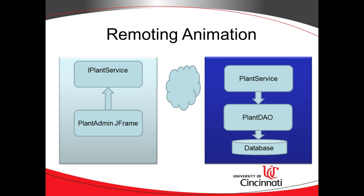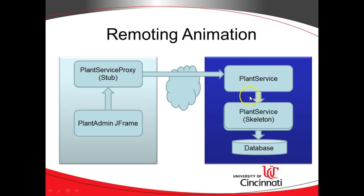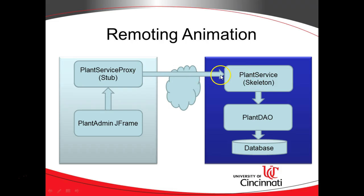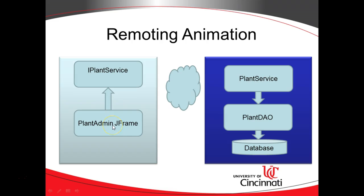So as we are programming it, it's going to look like that simple diagram. But let me show you what's actually going to happen with the proxy design pattern and our stub and skeleton. When our JFrame calls this interface, what actually happens in the background is it's going to invoke this proxy class — or in other words, this stub class — which implements the interface. What it's doing then is taking that method call and moving it across the network to the server side. On the server side, it looks like it's calling PlantService, which it eventually will. But in reality, it's first calling a skeleton that knows how to receive this network call. When it receives that network call, it messages over to the PlantService implementation class, which makes further calls down to the database, then returns the data back to our client and then to our JFrame, which displays that data.